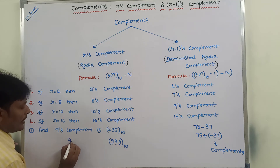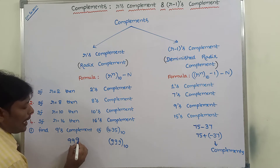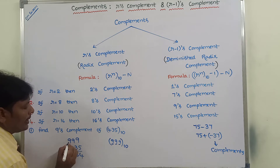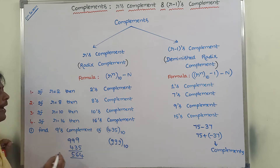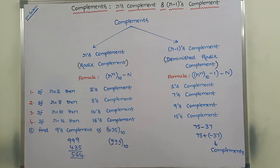Now we have to find the 9's complement by subtracting each and every digit of the given number from three 9s. That is 999 minus 435: 9 minus 5 is 4, 9 minus 3 is 6, 9 minus 4 is 5. So 564 is the 9's complement of 435 with base 10.